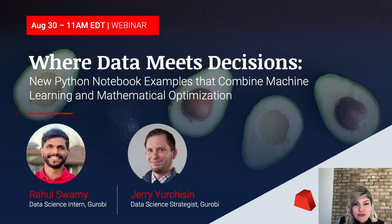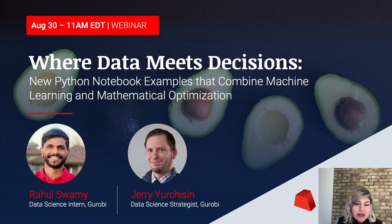Today we're thrilled to hear from the data science team here at Gurobi: Jerry Yurchison and Rahul Swamy. Jerry has over 10 years of experience applying operations research, machine learning, statistics, and visualization to improve decision making. Before joining Gurobi, Jerry was a senior consultant at On Location Inc., worked as a data scientist for Booz Allen, and also has several years of experience teaching a wide variety of college-level math and statistics courses.